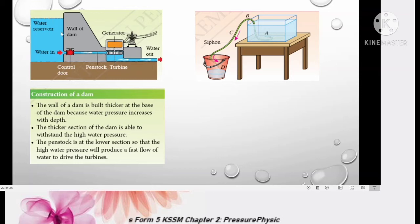For deep region, for deep water here, pressure at here is very high. So the wall of the dam needs to be thicker to withstand the high pressure. At the same time, you can see this penstock also placed at the bottom part because water here will get into the penstock at high pressure, thus able to turn the turbine faster. The turbine will turn faster, thus generate more electricity.